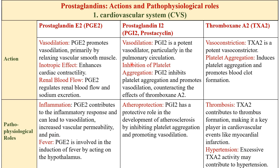Prostacyclin is also a vasodilator — a potent vasodilator, particularly in the pulmonary circulation — and its main function is to inhibit platelet aggregation. It counteracts the effect of thromboxane A2; these two work opposite to each other. Prostacyclin is a potent vasodilator that inhibits platelet aggregation, giving it an atheroprotective action in the development of atherosclerosis. On the other hand, thromboxane A2 is a potent vasoconstrictor that induces platelet aggregation and promotes clot formation.